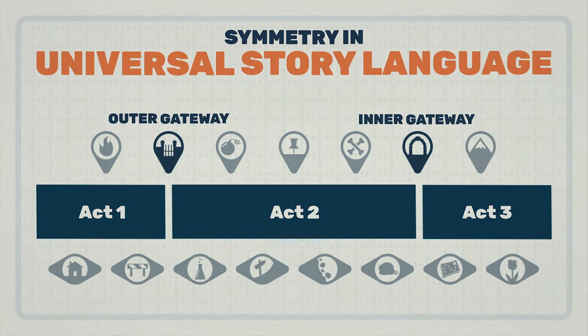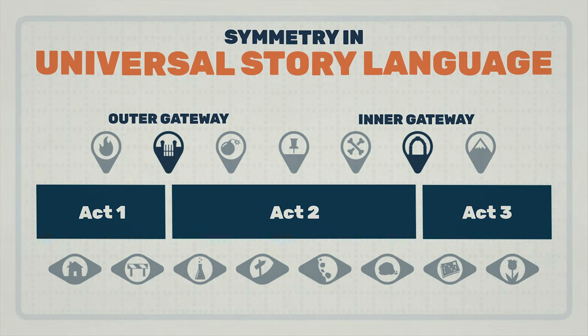The outer gateway and the inner gateway are both moments that separate the acts. They are also both clear decisions made by the protagonist surrounding the goal. The outer gateway shows a clear commitment, and the inner gateway shows a clear recommitment. They also both showcase a major change — there's a major external change in the outer gateway, and a major internal change in the inner gateway.